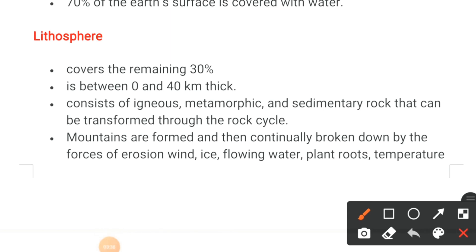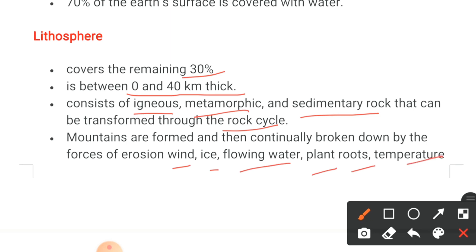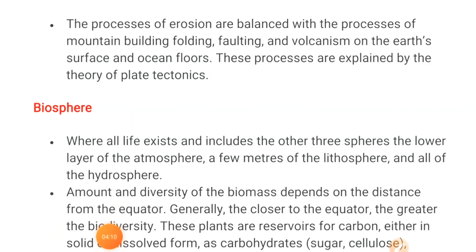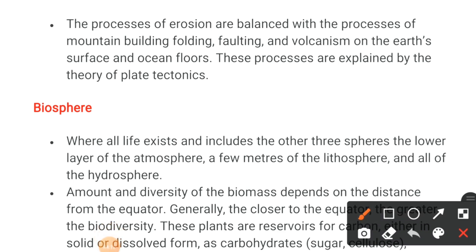Next we have the lithosphere, which covers the remaining 30% of the earth's surface. It is between 0 to 40 kilometers in thickness and consists of igneous, metamorphic, and sedimentary rock that can be transformed through the rock cycle. Mountains are formed and then continually broken down by forces of erosion such as wind, ice, flowing water, plant roots, and temperature changes — all factors that break down the structure of rocks.